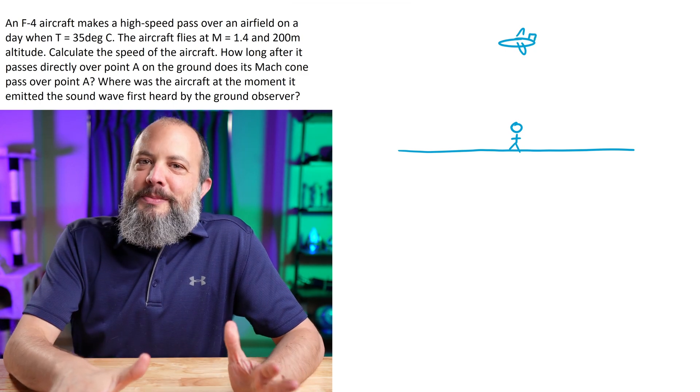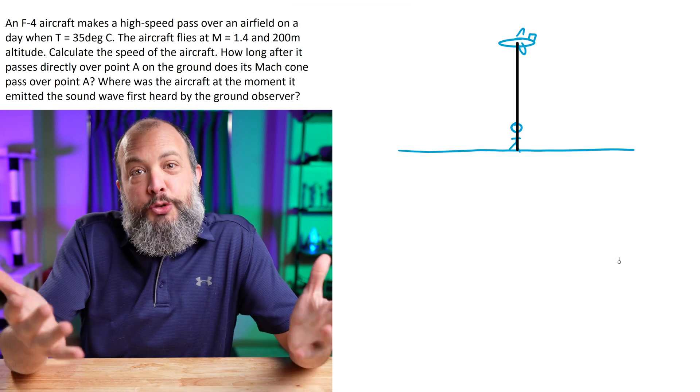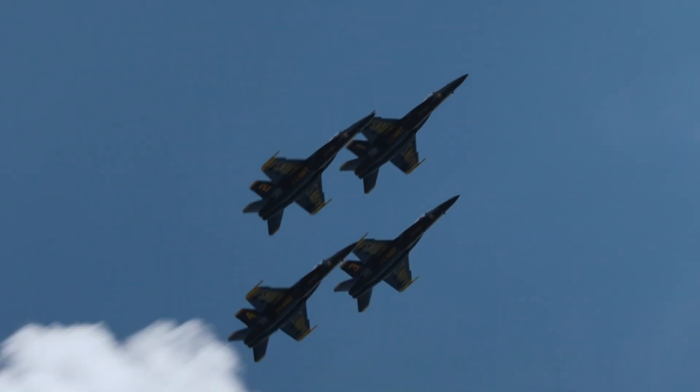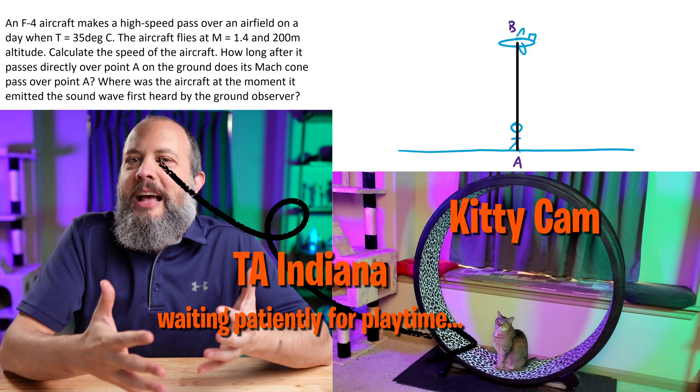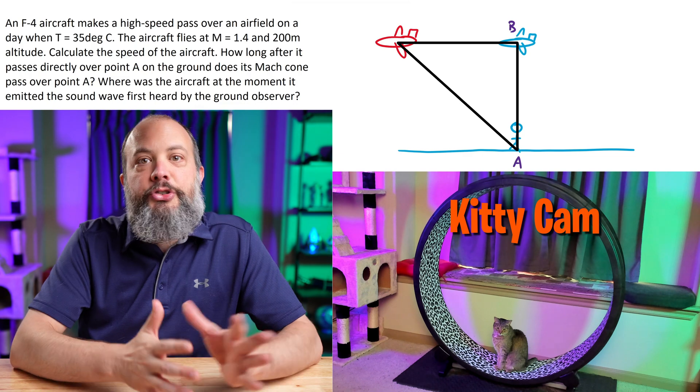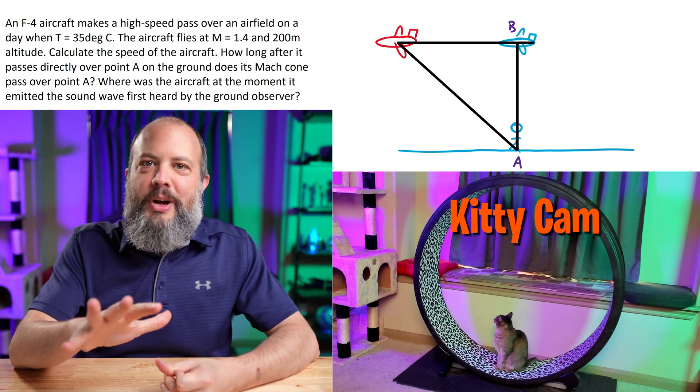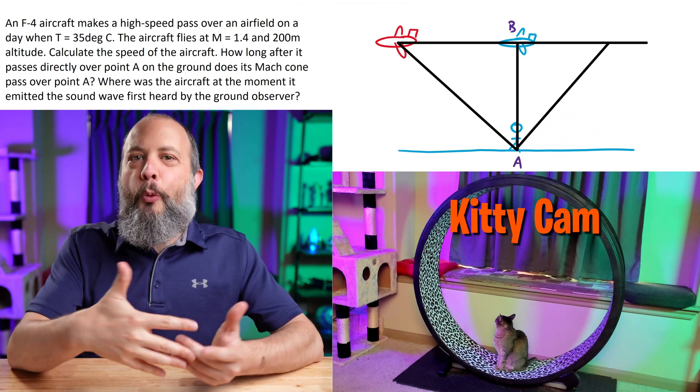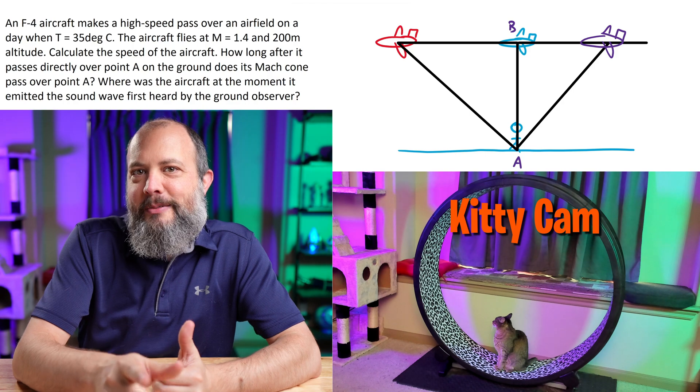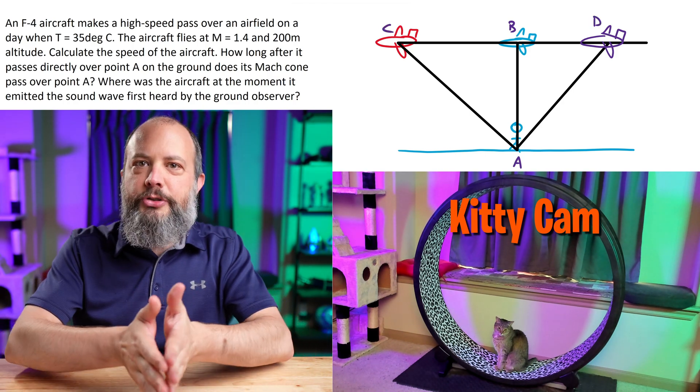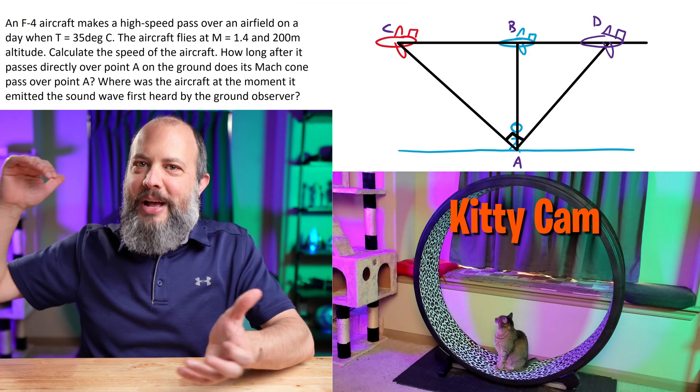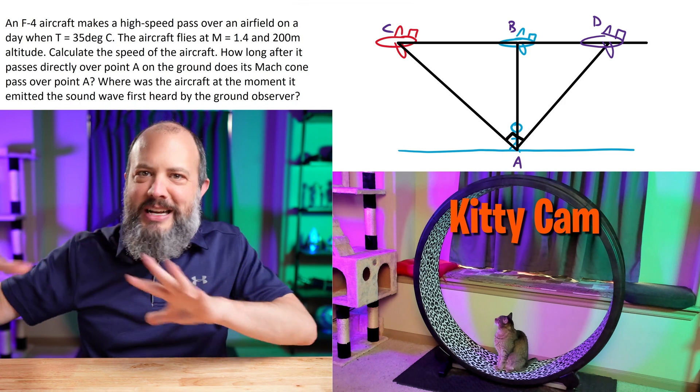The key to solving Mach cone problems is making a good drawing. In reading through the problem statement, I'm given information that the plane flies 200 meters over a ground observer at point A. We're interested in what's happening when the Mach cone reaches point A, so I'm drawing the plane in a new position further ahead. This triangle represents the Mach cone. The last triangle I'm going to draw is going back to point D, where was the plane when it emitted the sound that was actually first heard by you down at point A?